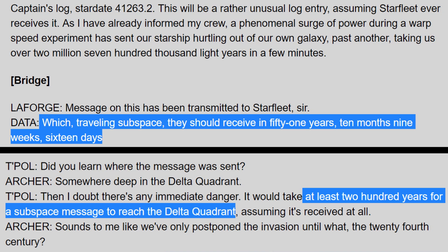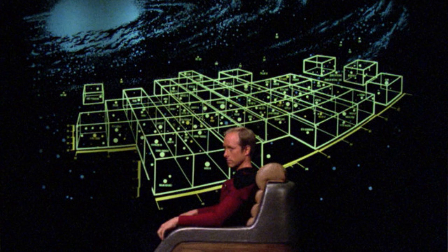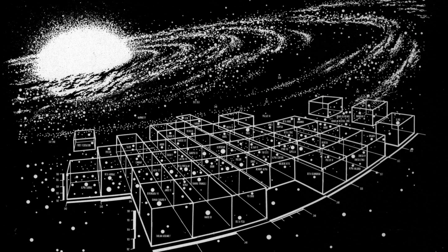For example, one episode they would say it would take weeks for a transmission to reach the Federation, and in the very next episode someone would have a live two-way conversation with someone in Starfleet headquarters. So obviously there are a bunch of contradictions. Maybe we could explain it by saying that different regions of space allow for different travel time, and we can also use that to explain some of the warp inconsistencies.